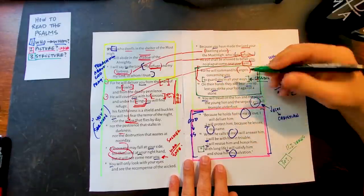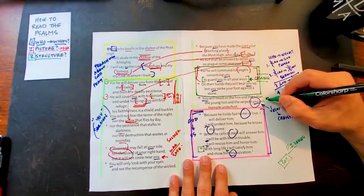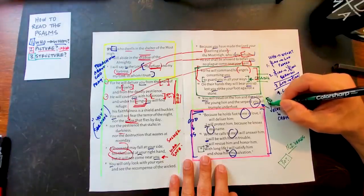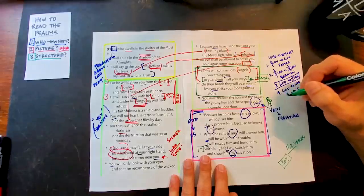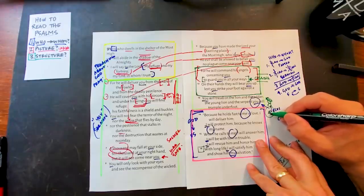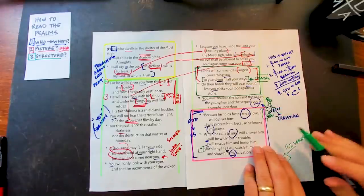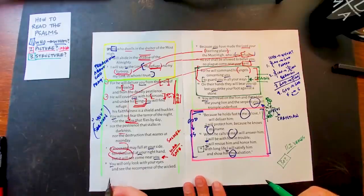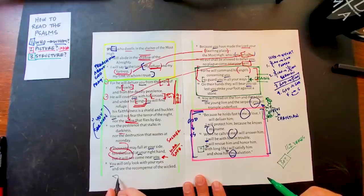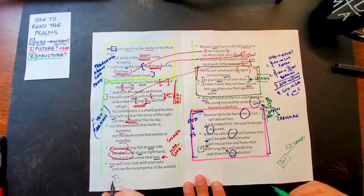You will tread on the lion, adder, young lion and serpent you will trample on your foot. Can you imagine, we're just these little baby birds. Is this what a baby bird looks like? Do you want to try to draw a baby bird? You draw a baby bird. And this little baby bird, what's this little baby bird doing? It's trampling on a lion. That's what a lion looks like. Look, you guys are going to always want Daniel to draw instead of me. Quit showing off.